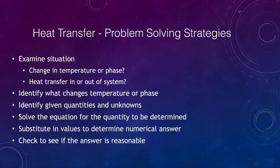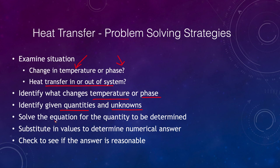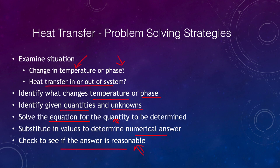For problem-solving strategies with heat: first, determine whether you have just a change in temperature or whether you need to consider latent heat. Identify whether heat is transferred in or out of the system. Determine what changes temperature and what undergoes a phase change — in our example, both the water and the soda changed temperature, but the phase change was only for the ice melting. Identify your given quantities, solve the equation for the unknown, substitute your values, and always check that your answer is reasonable.